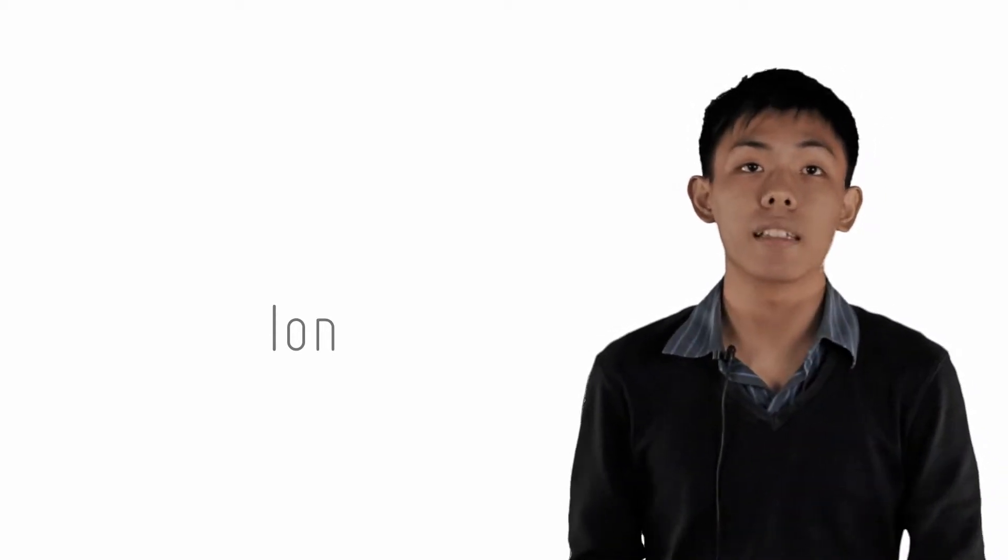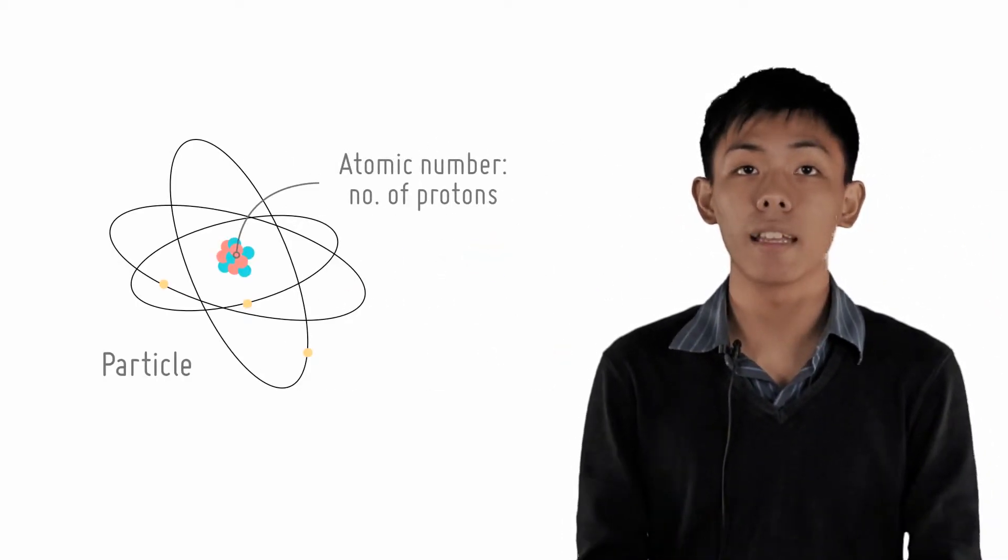The identity of a particle, regardless of an ion or an atom, is dependent only on one thing: the atomic number. This refers to the number of protons it has.